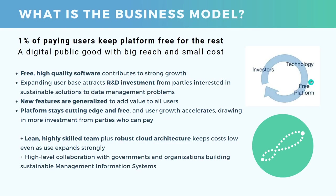The question we then often hear next is: well, how is that possible? What is the business model of Solstice and mWater that allows it to be free? The simple answer is that 1% of our user base keeps the platform free for the rest, by investing in the platform's continued features and some advanced customization. In other words, mWater and Solstice are increasingly a digital public good, which has a big reach combined with small costs. We aim for a virtuous circle where we produce free, high-quality software that keeps the platform growing in terms of adoption — more users coming on board and existing users using the system more intensively.